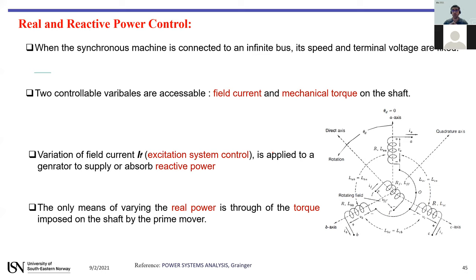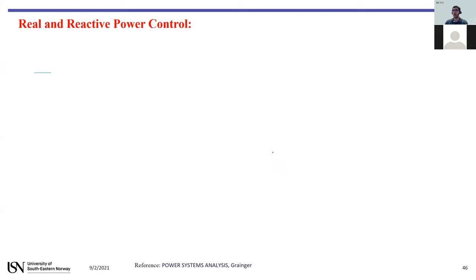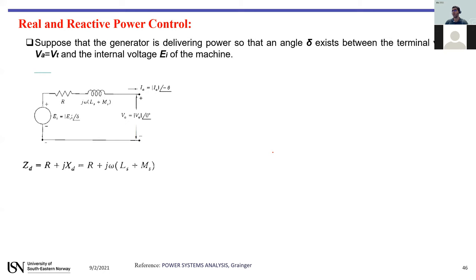In these two ways we can control reactive power and active power. We have other kinds of equipment that can be used in the power system for active and reactive power control, which we will talk about later with power electronics. However, inside the synchronous machine we have this opportunity to control them as well.